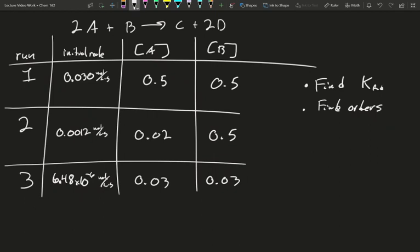In this problem, we have 2A plus B makes C and 2D. We're going to start with A's and B's, combine them, and look at initial rates from several concentration mixes. Given this data, solve out the orders of the different concentrations in the rate law and solve the K forward. Go ahead and give it a try and come on back.